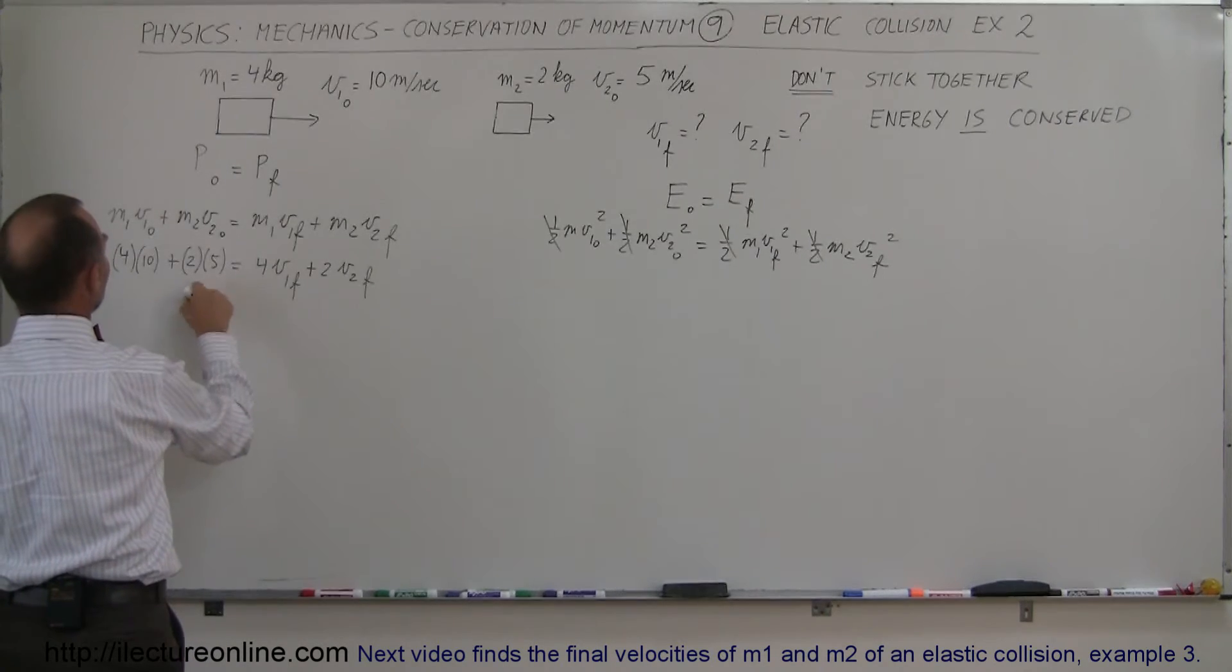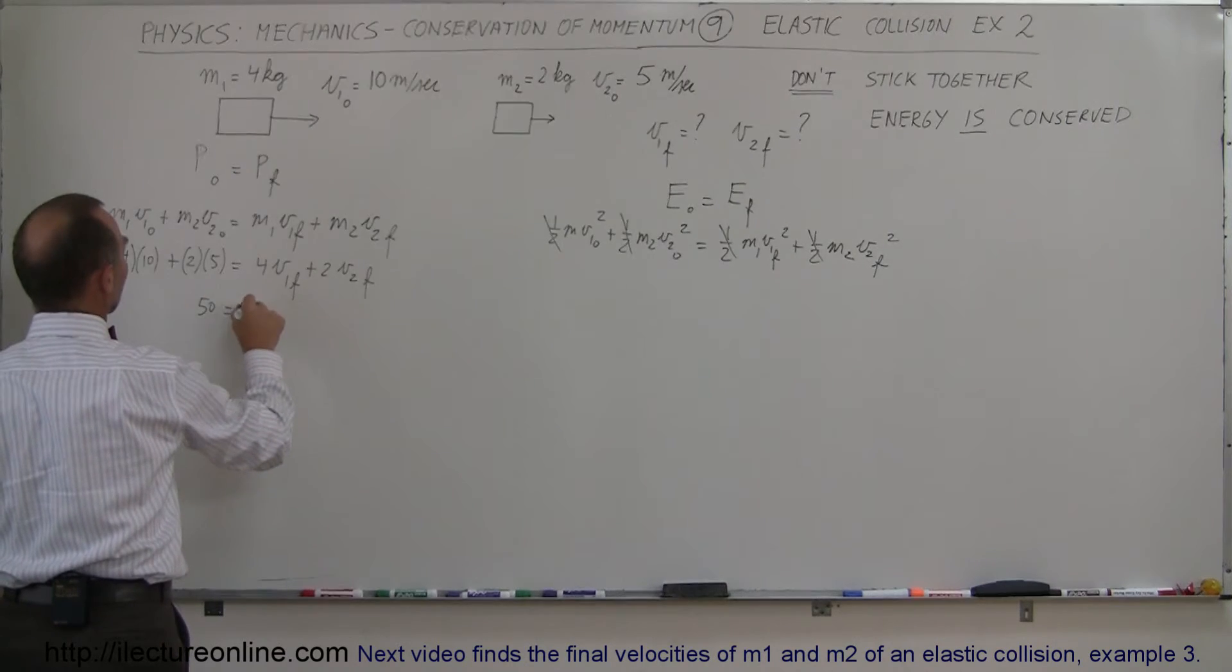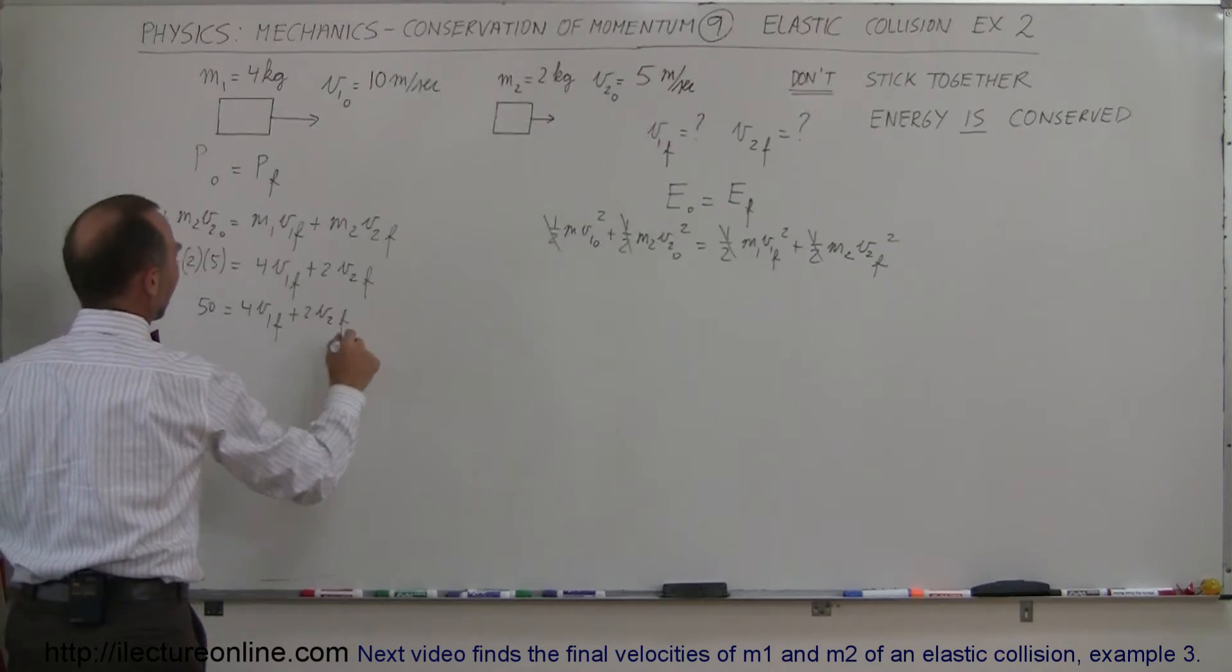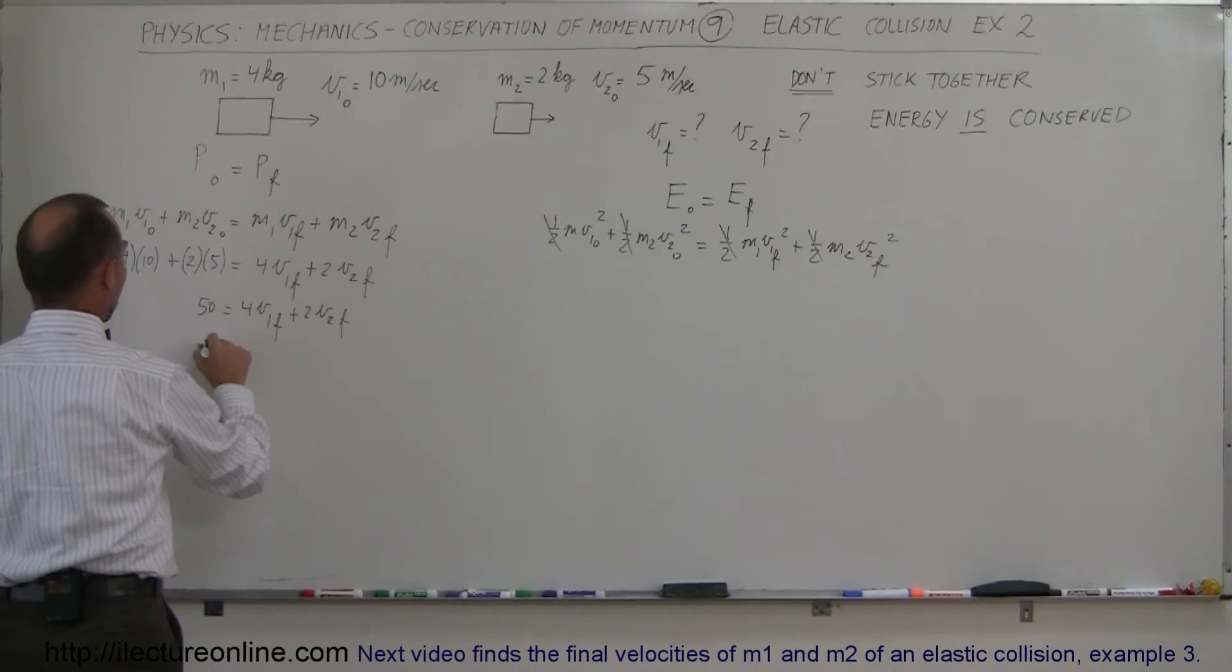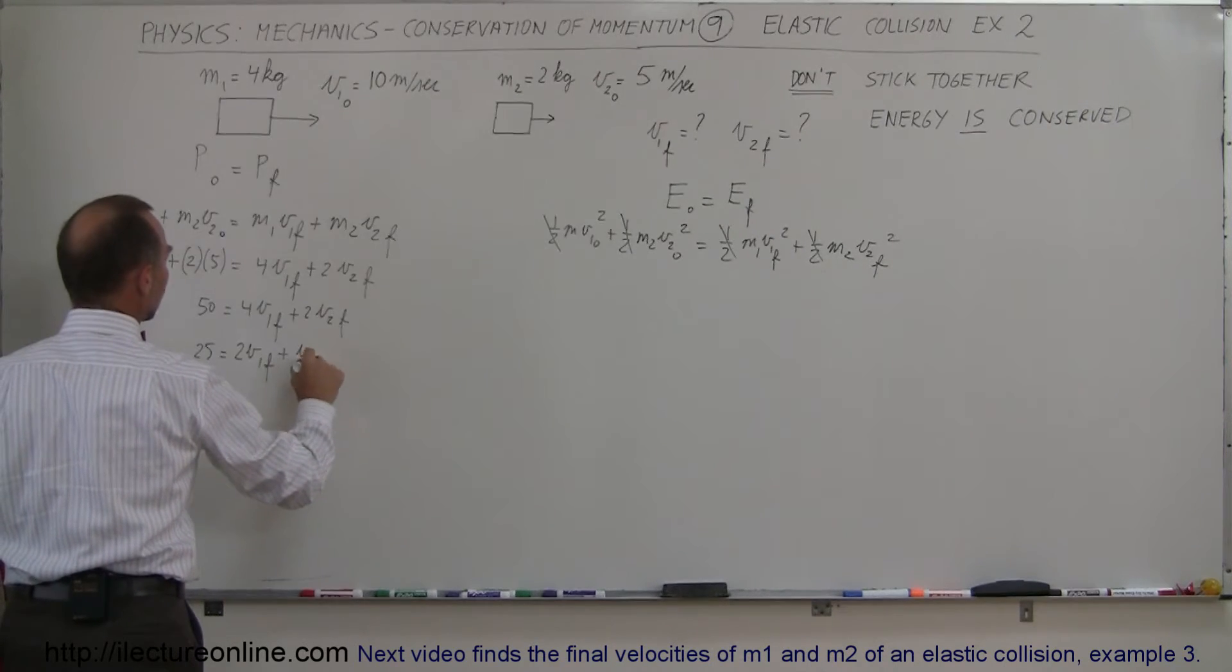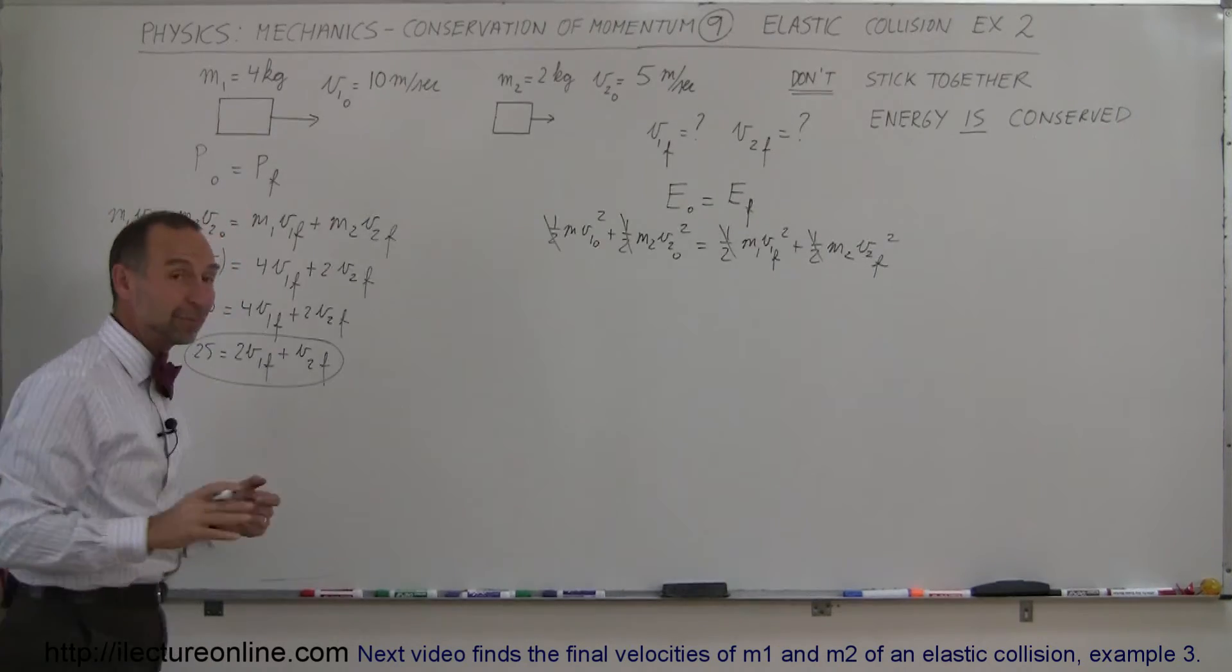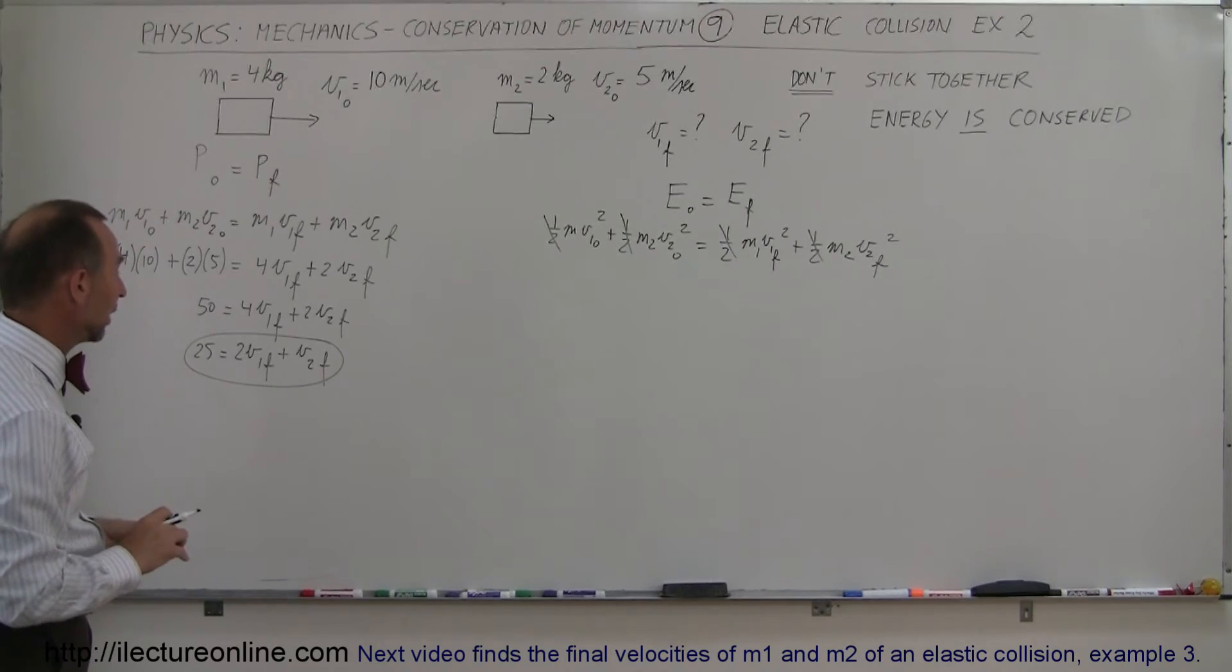And of course combining this, this is 40 plus 10, so we have 50 is equal to 4 V1 final plus 2 V2 final, and finally I can divide both sides by 2, and so this is 25 equals 2 V1 final plus V2 final. So there we have our first equation that came from the conservation momentum, where we have the two unknowns V1 final and V2 final.